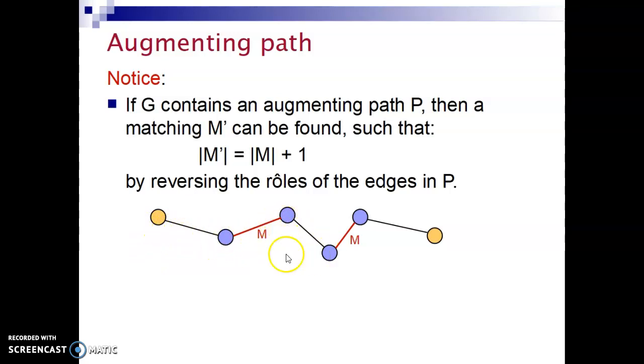Here is our example. Alternating path, which is also an augmenting path because it's between the free vertices. Now we exchange the roles, reverse the roles of the edges. This edge did not belong to the matching M. Now it belongs to matching M prime. This edge here belonged to matching M. Now it does not belong to matching M prime.